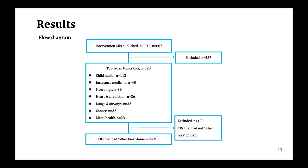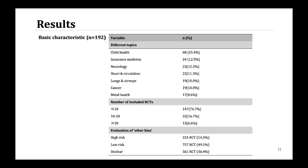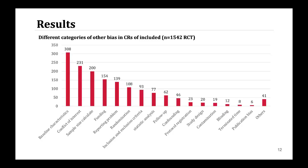This is the flow chart of our study. We finally included 192 Cochrane Reviews involving 1,542 randomized controlled trials. The topic of most interest was child health, and most Cochrane Reviews included less than 10 RCTs. In terms of evaluation of Other Bias, 'no risk' was the most common judgment. We found baseline characteristics to be the most common category in included RCTs. Conflict of interest is a common dimension in Other Bias evaluation. In addition, optimization, follow-up, and blinding also account for a large part.